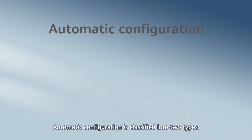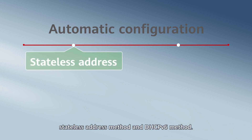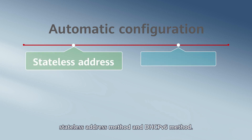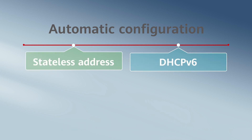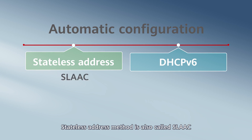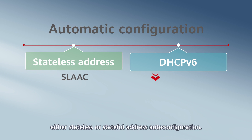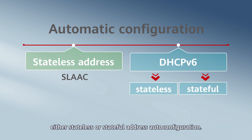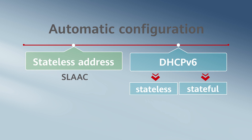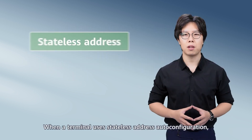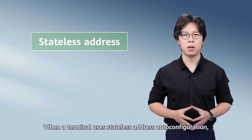Automatic configuration is classified into two types: stateless address method and DHCPv6 method. The stateless address method is also called SLAAC. However, DHCPv6 method can also be classified as either stateless or stateful address autoconfiguration.